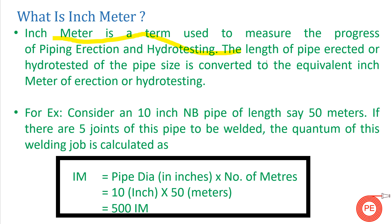Similarly, let's see what inch meter is. Inch meter is used to measure the progress of piping erection — how much pipe you have erected and how much pipe you have hydro tested during your commissioning stage. Using the same example: a 10 inch NB pipe, 50 meters long, with five joints. The formula is: Inch Meter = Pipe Dia (in inches) × Number of Meters. So here, 10 inch × 50 meters = 500 IM.